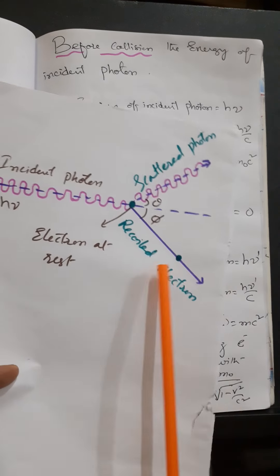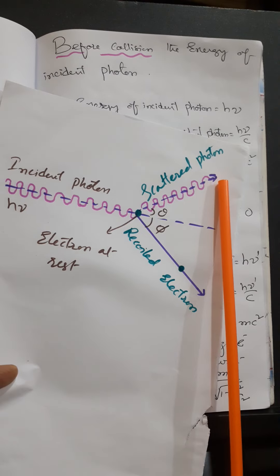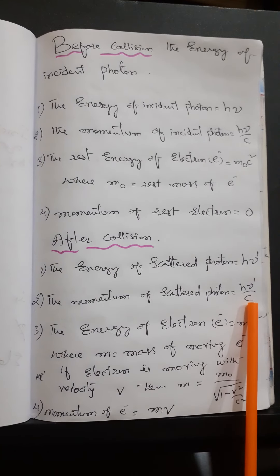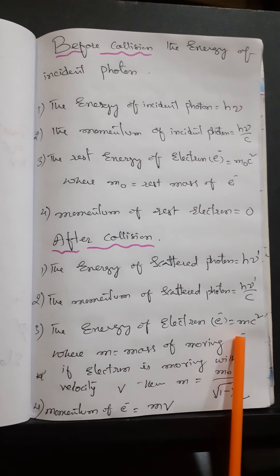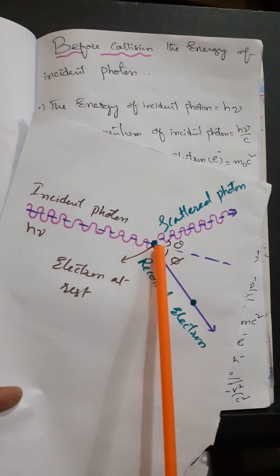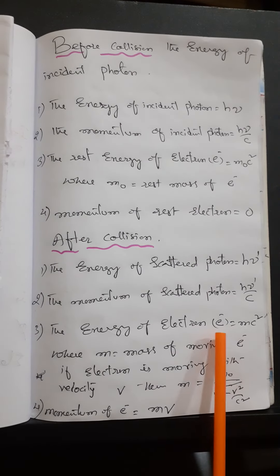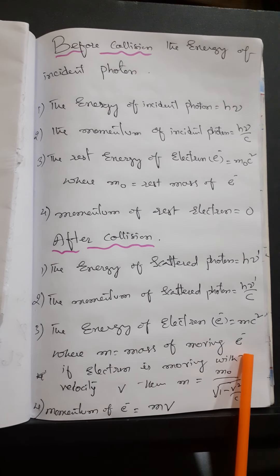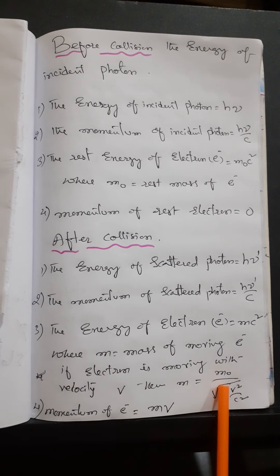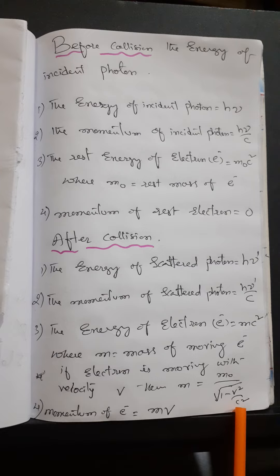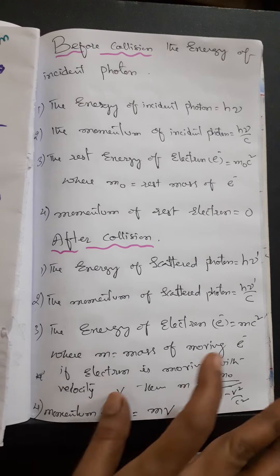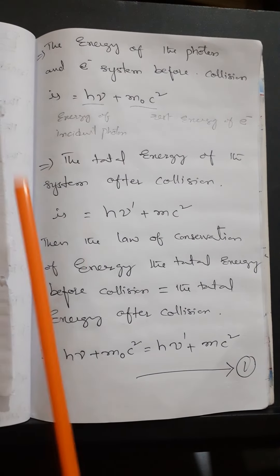After the collision: the scattered photon has energy h·nu' and momentum h·nu'/c. The energy of the electron after gaining the photon's energy is mc², where m is the mass of the moving electron. If the electron moves with velocity v, then m = m₀ / √(1 − v²/c²), and the momentum of the moving electron is mv.